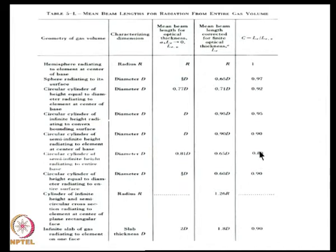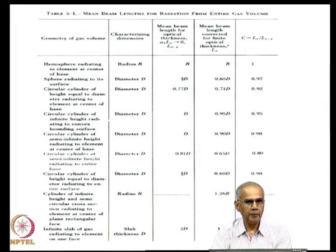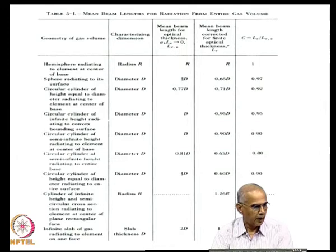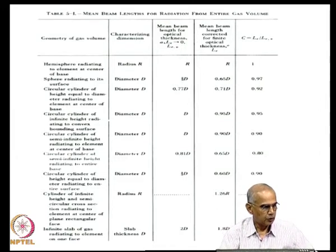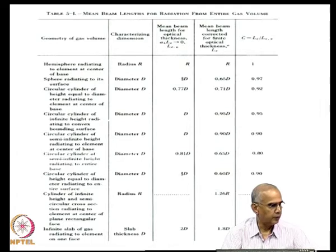If there is a situation in which the encountered geometry is not covered by this table and you would like to estimate the mean beam length, you are forced to use the mean beam length expression for the optically thin limit. So what is the mean beam length in the optically thin limit?